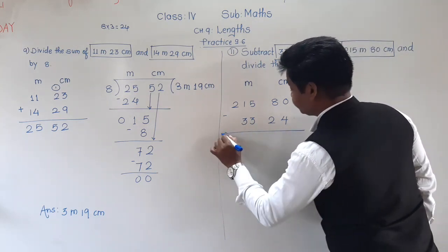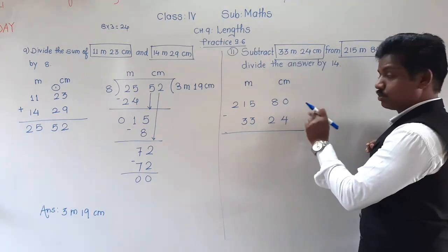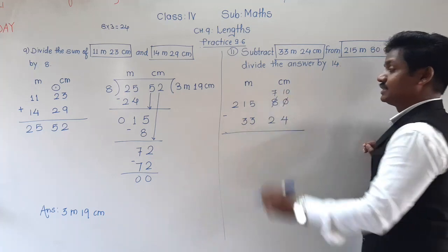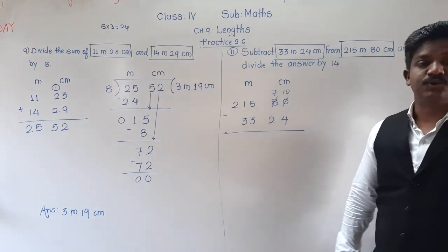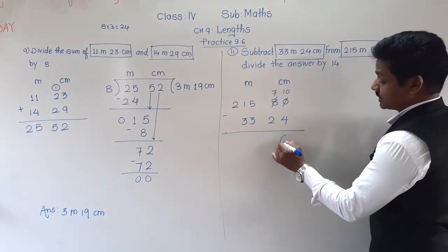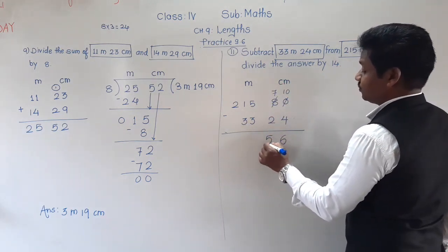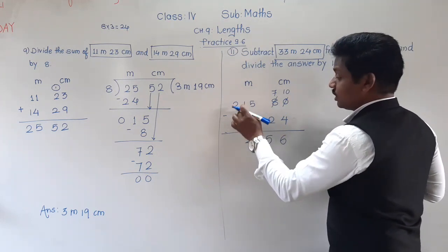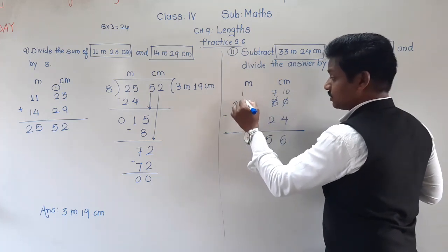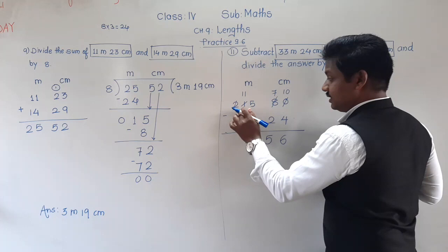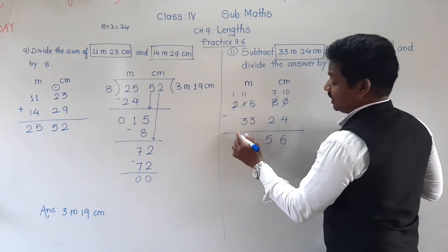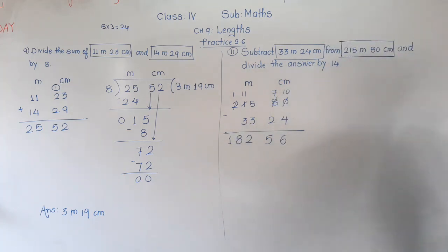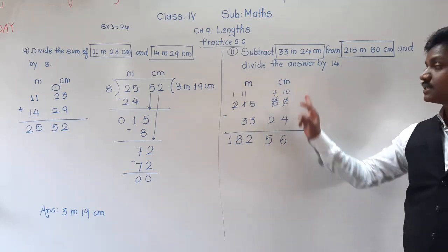Now subtraction as usual. 0 minus 4 is not possible, so borrow from 8: 10 minus 4 is 6, the 8 becomes 7. Then continuing through the columns, the answer comes to 182 meter 56 centimeter.